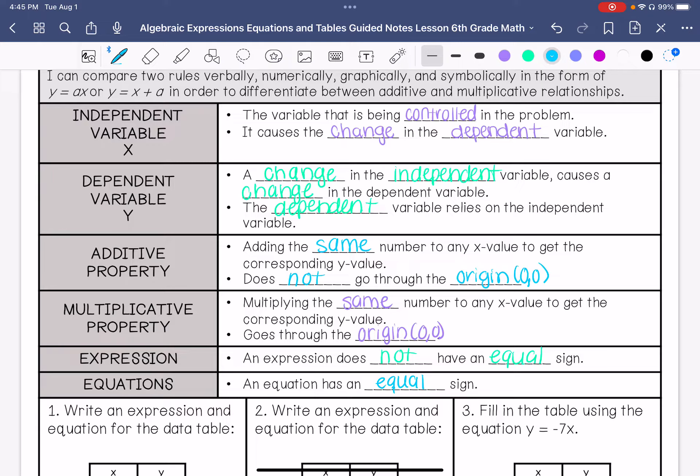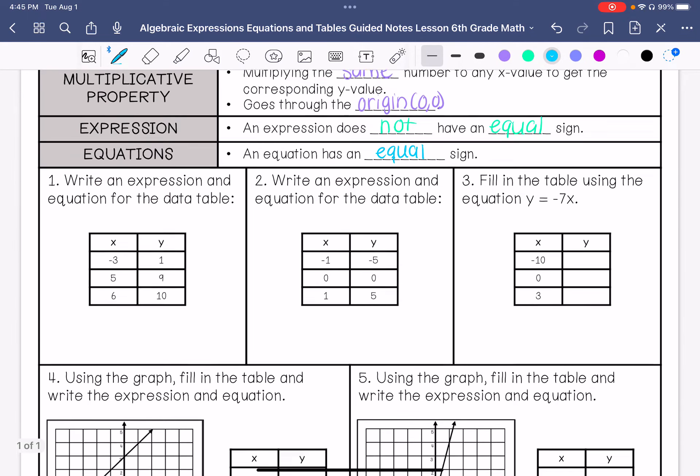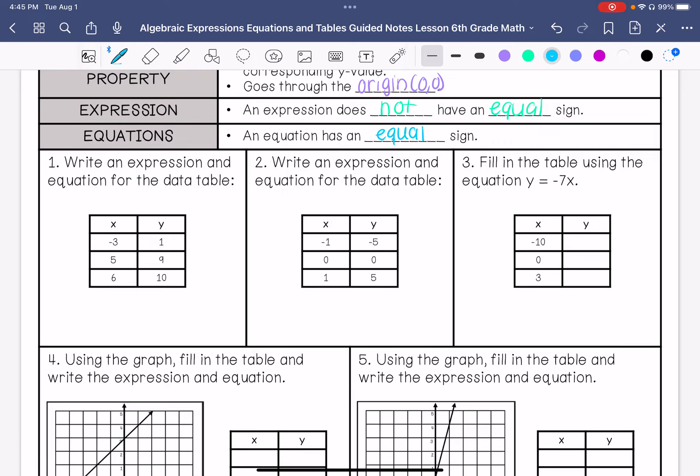We need to look at the pattern that's going on here. How do I get from negative 3 to 1? How do I get from 5 to 9? That's easy for me to recognize. That's plus 4. 6 plus 4 is 10, and negative 3 plus 4 is 1. So I would be doing x plus 4 as the expression, and then the equation is y equals x plus 4.